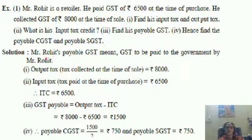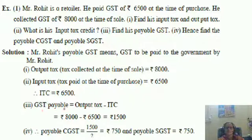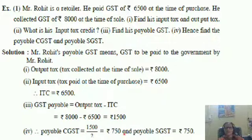Let us solve it one by one. Rohit's payable GST is the tax to be paid to the government. Output tax, that is tax collected at the time of sale, is Rs. 8000. Input tax, that is tax paid at the time of purchase, is Rs. 6500. Input tax credit (ITC) is Rs. 6500. GST payable equals output tax minus ITC, so it is 8000 minus 6500, that is Rs. 1500. Payable CGST equals GST divided by 2, so Rs. 750 CGST and Rs. 750 SGST.